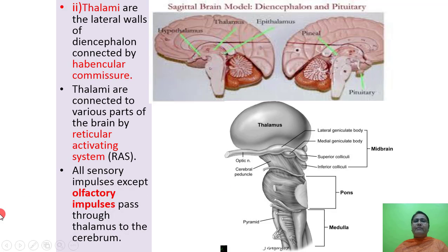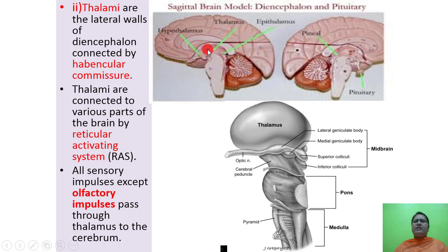The thalami form the lateral walls of the diencephalon and are connected by the habenular commissure. They are connected to various parts of the brain by the reticular activating system (RAS). All sensory impulses, except olfactory impulses, pass through the thalamus to the cerebrum.